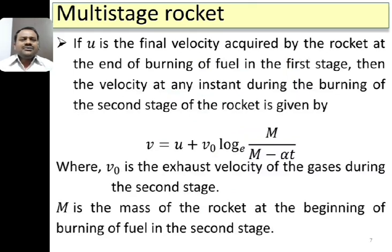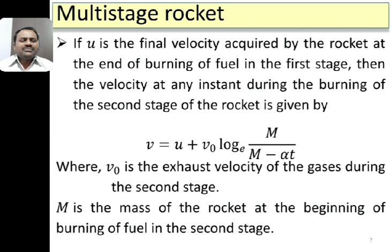In a multi-stage rocket, if u is the final velocity acquired by the rocket at the end of burning of fuel in the first stage, then the velocity at any instant during burning of fuel in the second stage is given by V = u + V₀ · ln(m / (m − αt)), where m is the mass of the rocket at the beginning of burning of the fuel in the second stage, t is measured from the instant the second stage starts burning, and V₀ is the exhaust velocity of gases during the second stage.